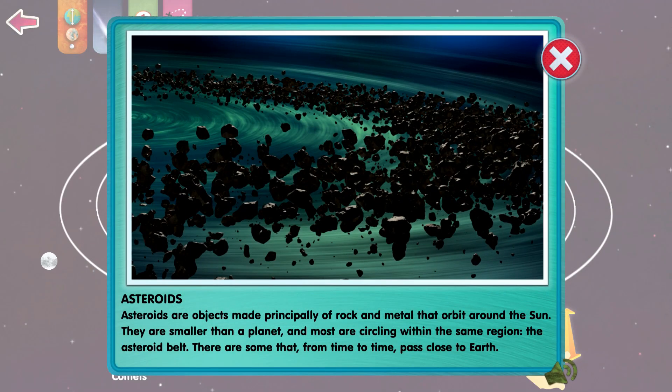Asteroids are objects made principally of rock and metal that orbit the Sun. They're smaller than a planet and most are circling within the same region, the asteroid belt. There are so many that from time to time pass close to Earth.